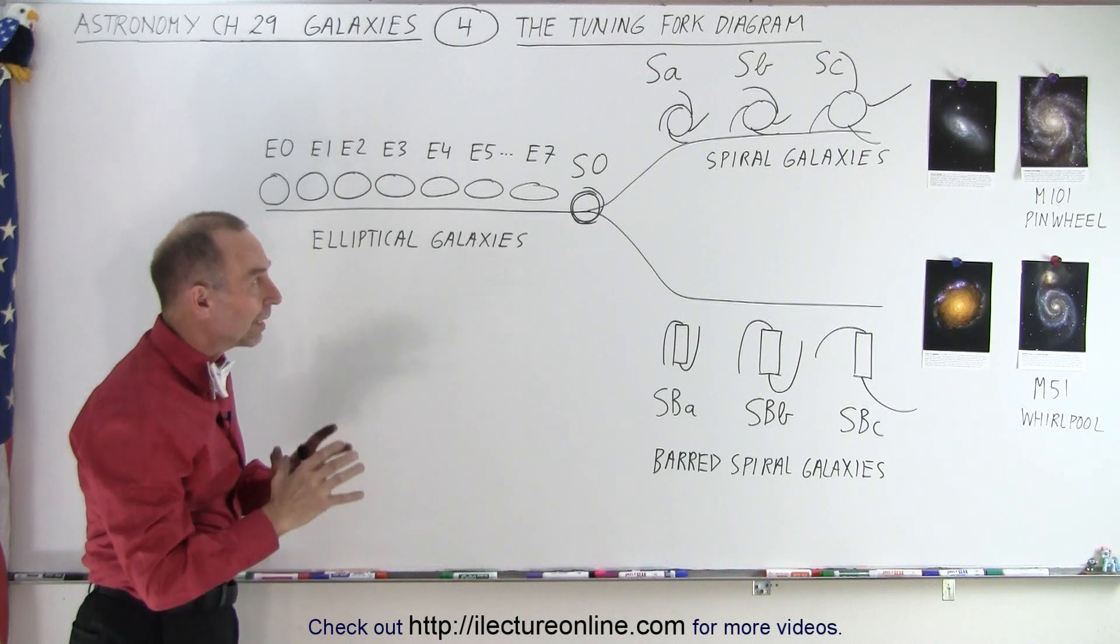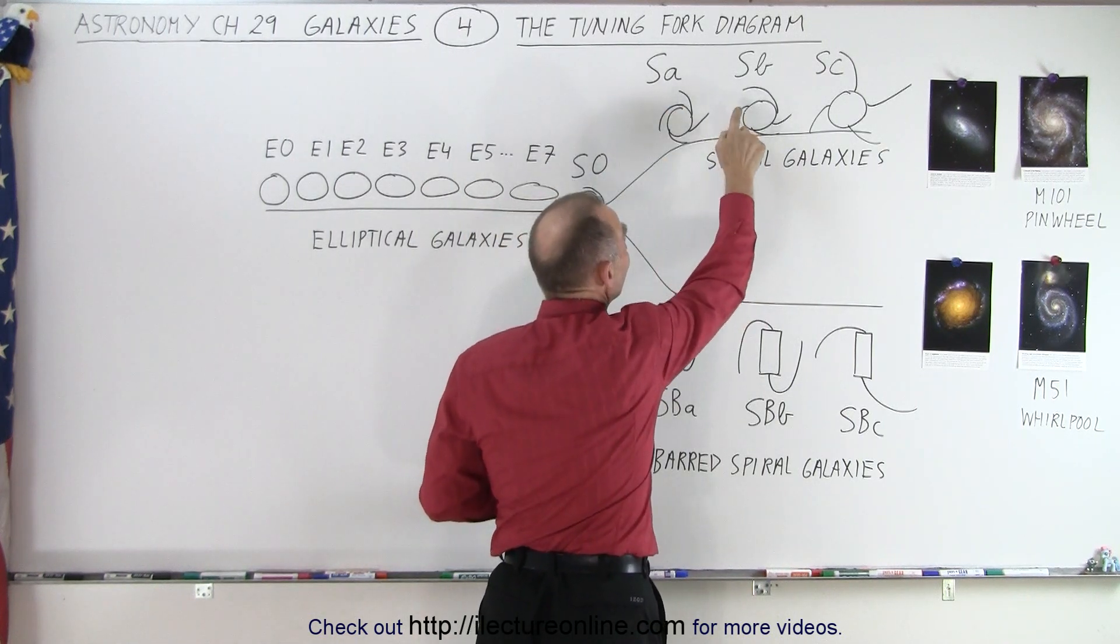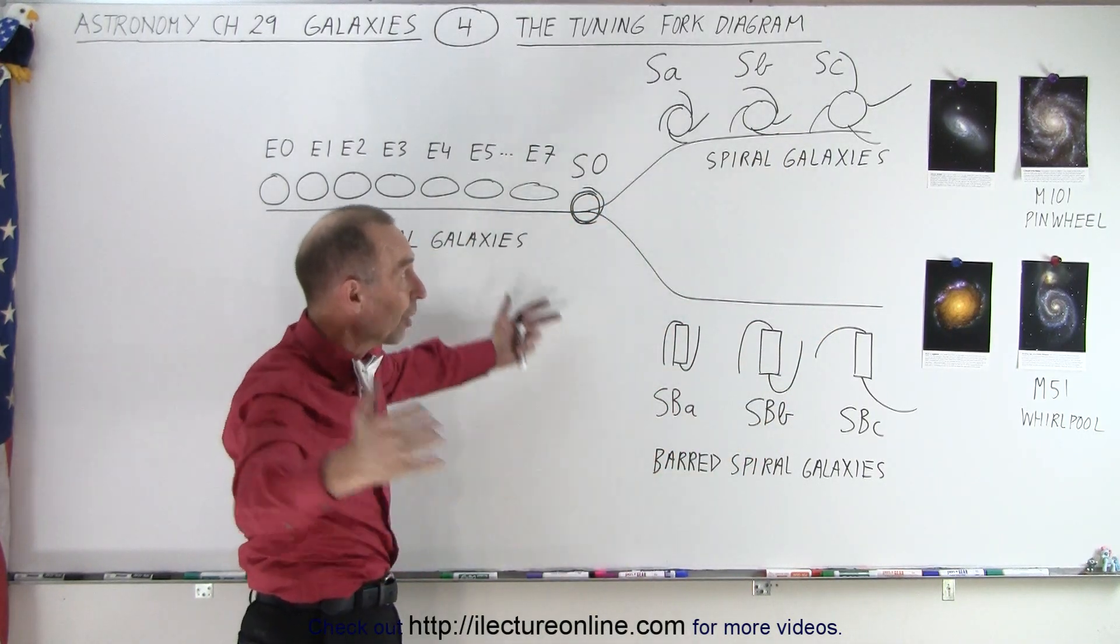So we classify the spiral galaxies, both the regular spirals and the barred spirals, by how tightly their arms are wound around them. If the arms are fairly tight around them we call them SA for spiral class A, SB for spirals B, and SC for spirals C. You see that when it's an SC the arms are really far out, when they're SA they're very tightly to the central bulge, and for SB they're somewhere in between.